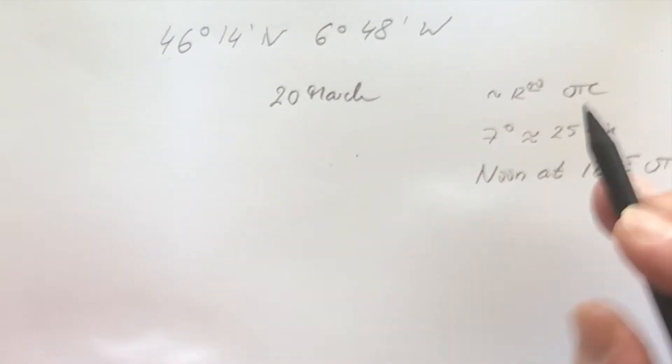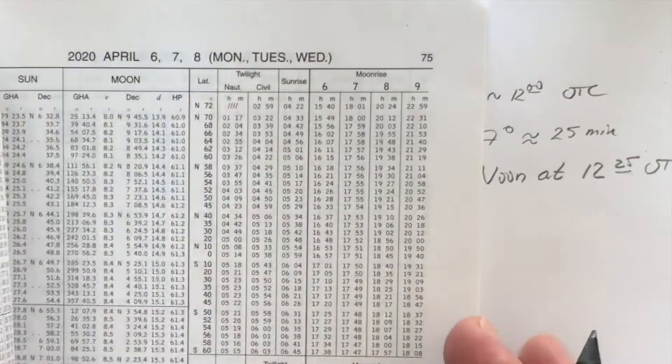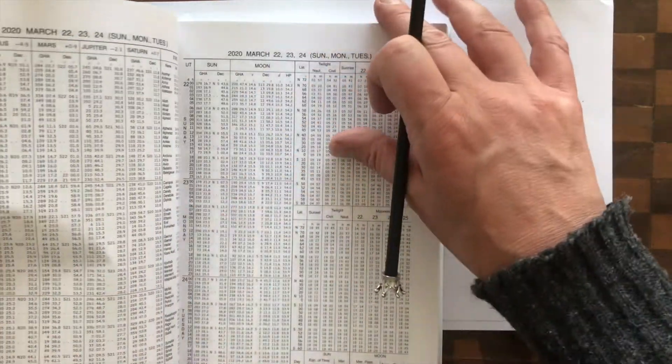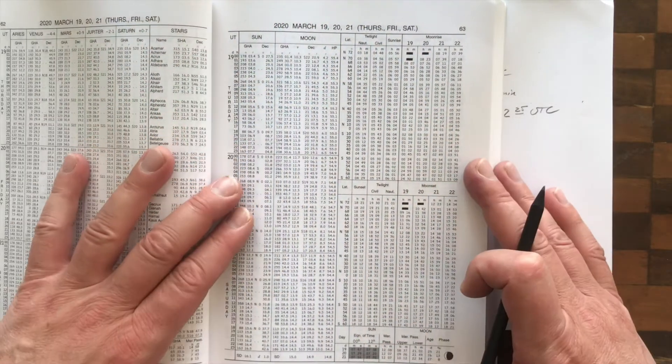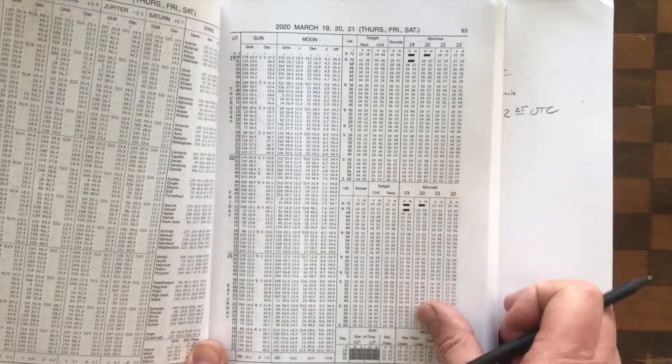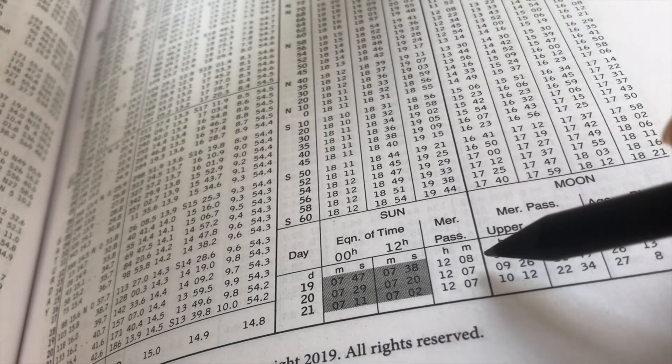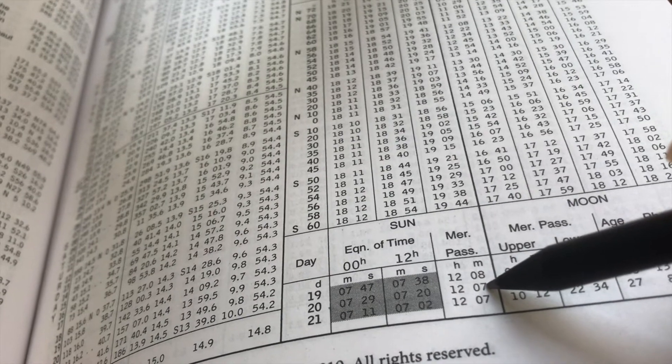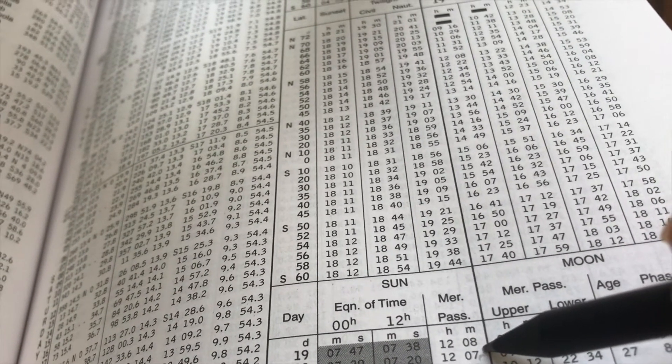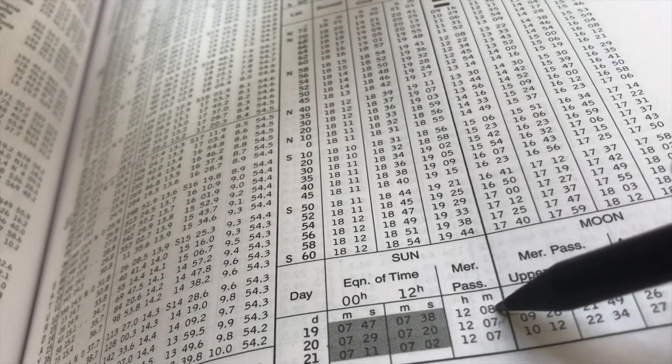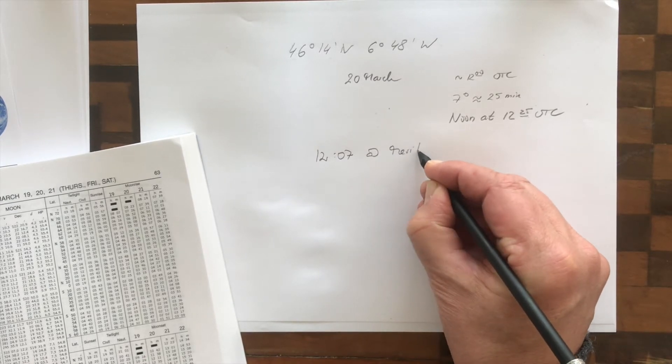Now let's look if that is correct or if we do it more precisely. First we have to look up when is it noon in Greenwich. For that we need to find the 20th of March on the daily pages. Here is the 20th of March. You can see that it says sun meridian passage on the 20th at 12 o'clock and 7 minutes past the hour UTC. So we write down 12:07 at meridian.